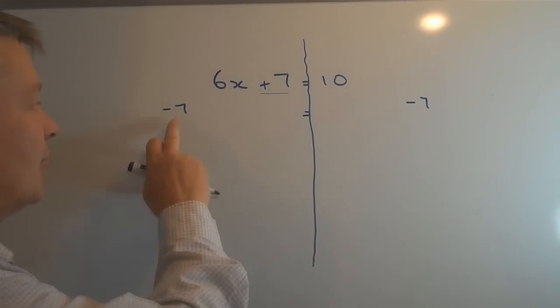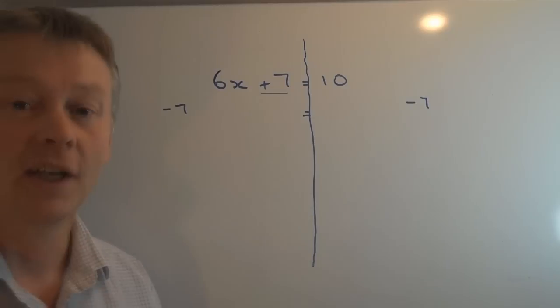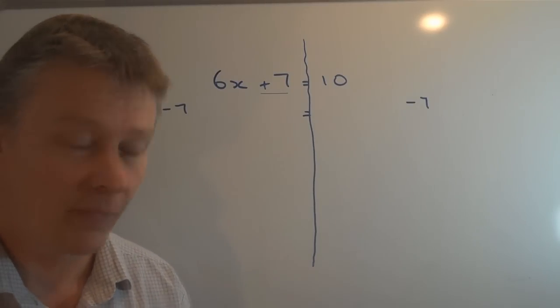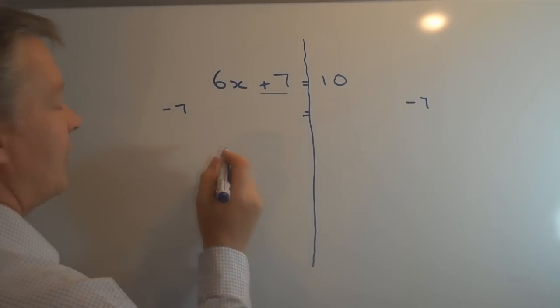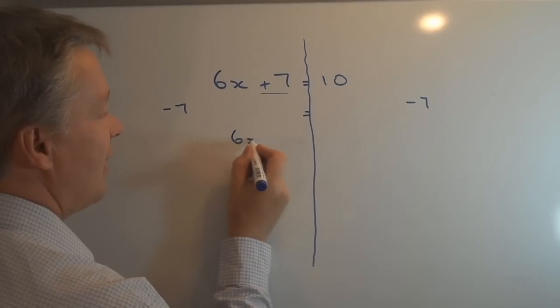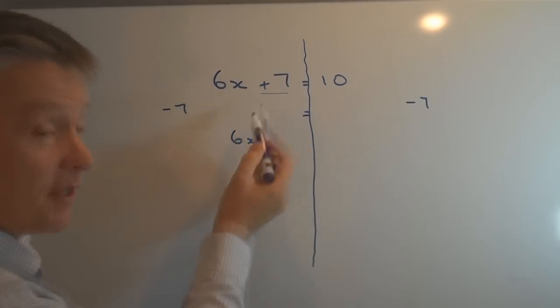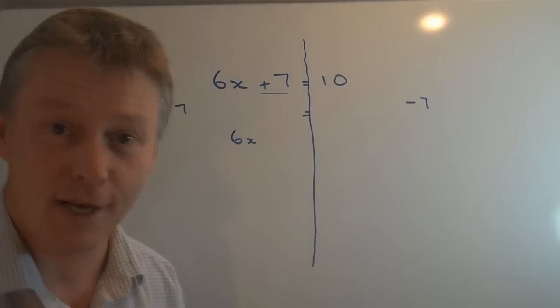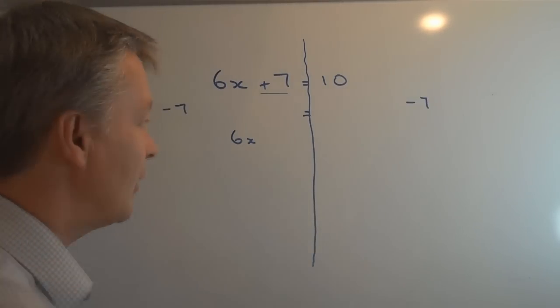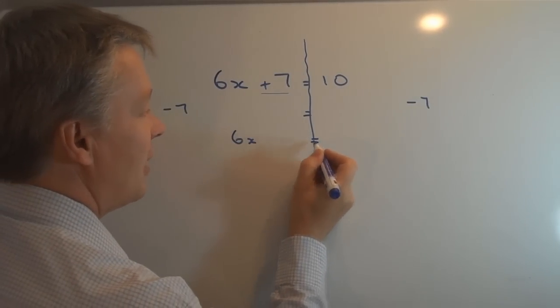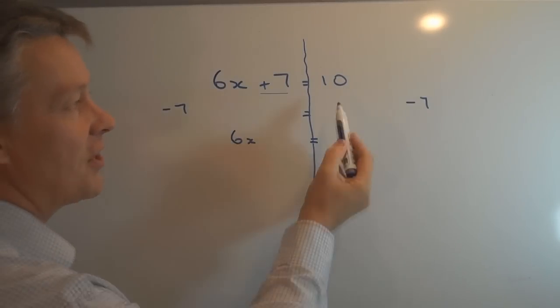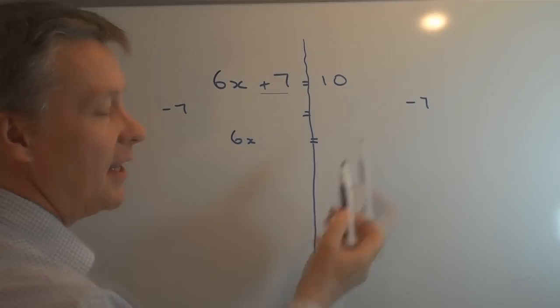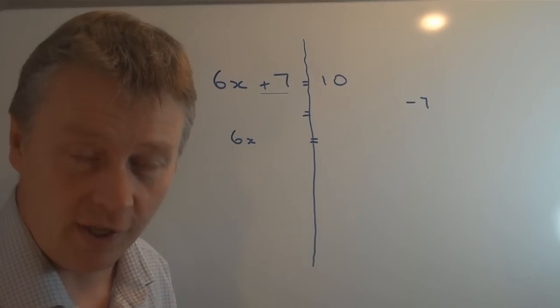I can then use that take away seven to cancel the positive seven. So on this side now I'm left with 6x, because positive seven take away seven is zero, so I'm just going to ignore it. I'm going to keep my equals sign there in the middle.